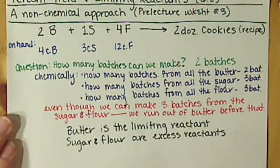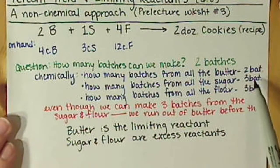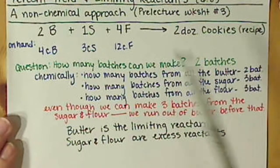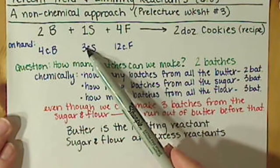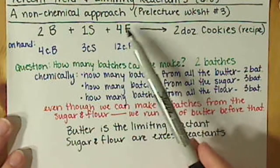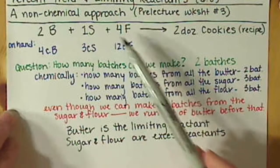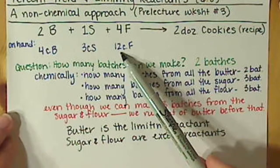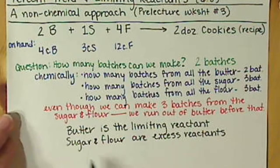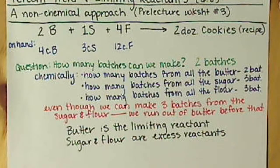We know that if we make two batches, we use up two cups of sugar, so we'll have one cup left. We need eight cups of flour, so we'll have four cups of flour left. Those are what we call excess reactants — that's what we're going to have left over from making these cookies.